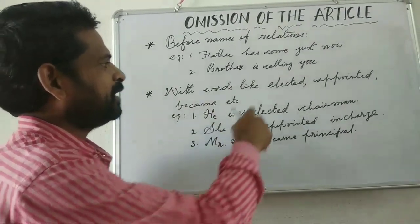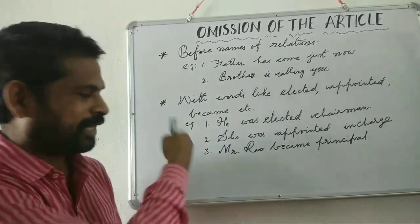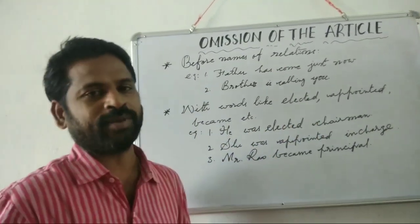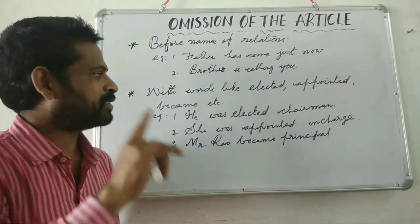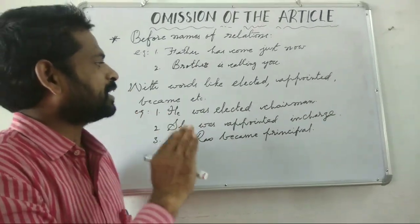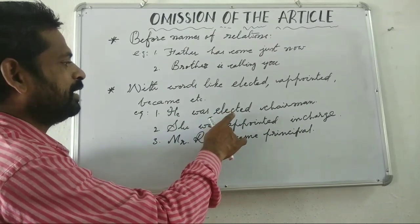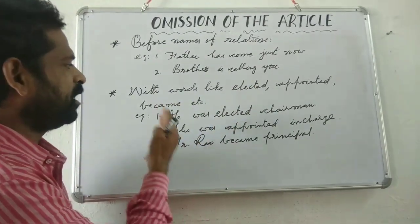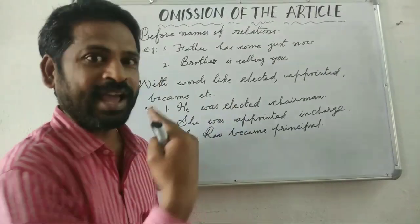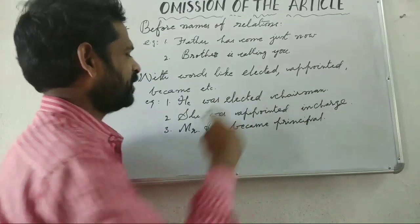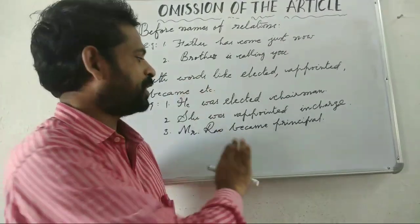With words like elected, appointed, became — these do not need an article. 'He was elected chairman' — note that 'he was elected as chairman' or 'he was elected as a chairman' are both wrong. The words 'as' and 'a' should not be used with elected, appointed, or became. 'She was appointed in-charge' — not 'as an in-charge.' 'Mr. Rao became principal' — not 'the principal.' We use plain form without any article.